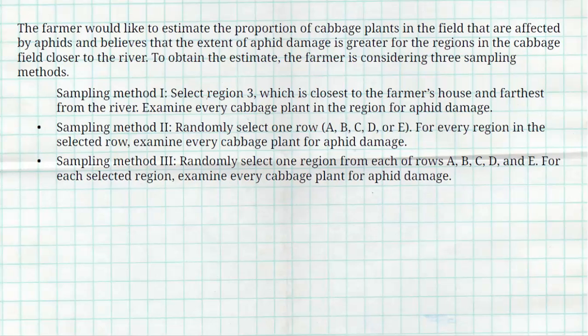Sampling method one, he's going to select region three, which is closest to the farmer's house and farthest from the river. He's going to examine every cabbage plant in that region for aphid damage. Doesn't sound like a very good sampling method.